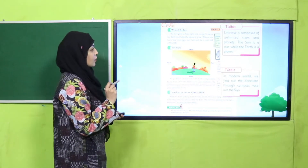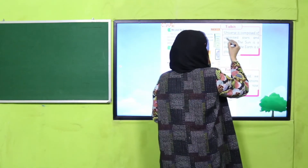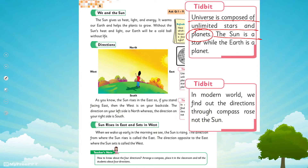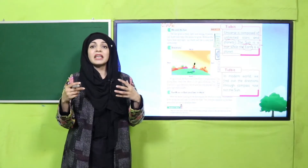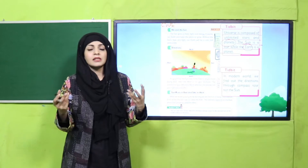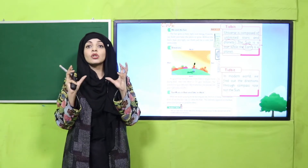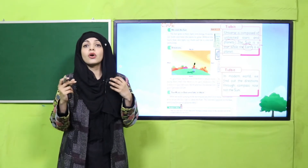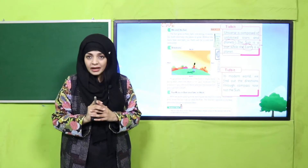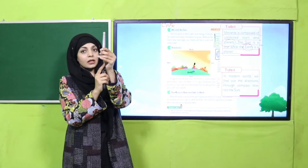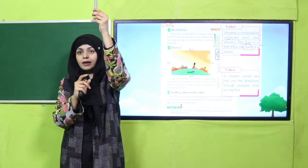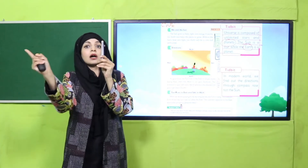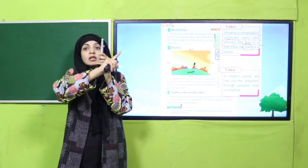Some important tidbits: the universe is composed of unlimited stars and planets. The Sun is a star while the Earth is a planet. Sun is stationary — it is not moving. Aapko sun aise lagta hai ke sun nikal raha hai, but it is the Earth which is moving around the Sun.